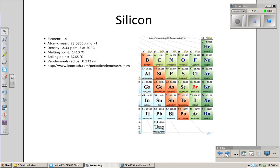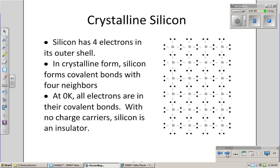Now silicon is element number 14. It's in column 4 of the periodic chart. As such, it has 4 electrons in its outer shell. When forming a crystal, silicon will form covalent bonds with 4 neighbors, resulting in all of the electrons tied up in covalent bonds. What that means is that there are no electrons available for carrying current at 0 degrees Kelvin.